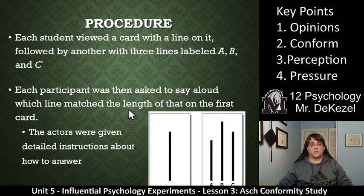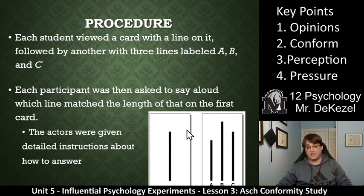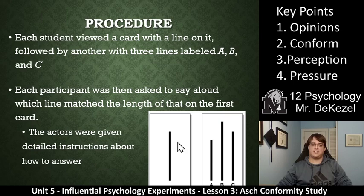The actors were given detailed instructions about how to answer. They would maybe all answer the correct answer, or they would all answer the wrong answer. I think we can all see that this line right here is exactly the same as line A — obviously these are the same. Actually, it's the same as C. But if you went, 'oh, I must have been wrong the first time,' you might be conforming to what I was saying. But this line here, to me, looks like it would be the same length as C.